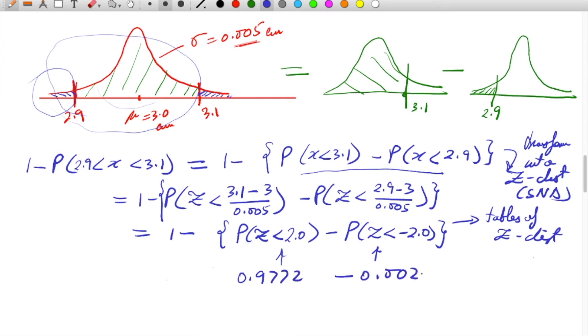So 1 minus 0.9772 minus 0.0228 gives us about 0.0 or 2.56%. So about 2.56% of ball bearings may not satisfy the conditions.